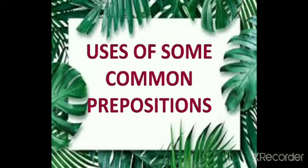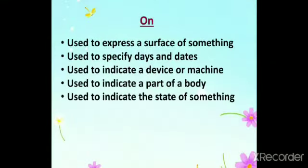Let us have a look at the uses of some common prepositions. 'On' is used to express a surface of something, used to specify days and dates, used to indicate a device or machine, used to indicate a part of a body, and used to indicate the state of something.